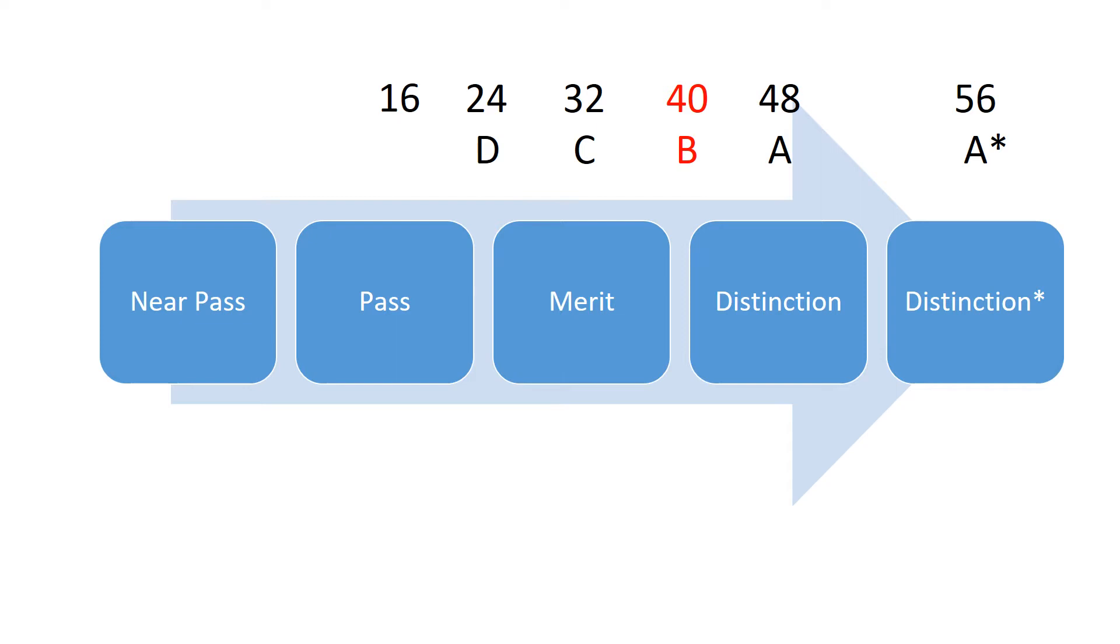A Distinction Star is the equivalent to an A-star at A level. A Distinction is the equivalent to an A at A level. A Merit is the equivalent to a C at A level. And you can see the B and the D sit slightly in between these.